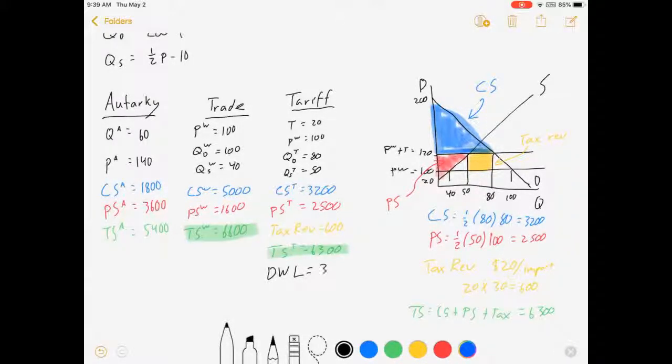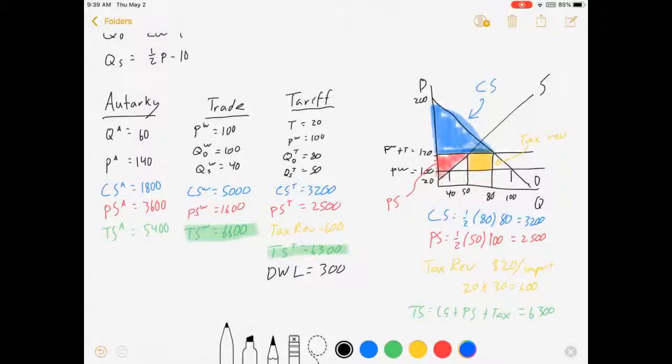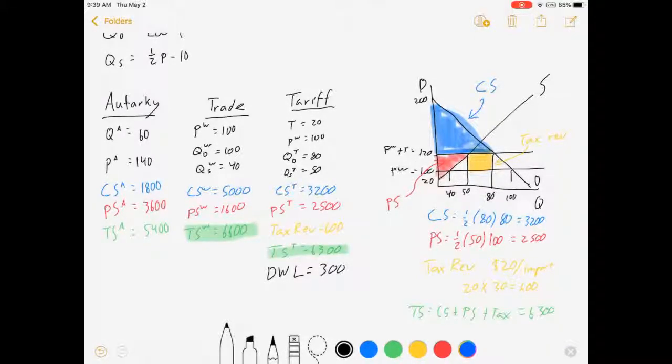In this case, surplus went down by $300. Now where does that show up on the graph? It shows up in this area, which was all shaded in under free trade and now is not. So deadweight loss is there. I'm going to erase that because it makes it look like I'm trying to say it's tax revenue. Once we imposed these trade restrictions, it made for less overall surplus in the market.